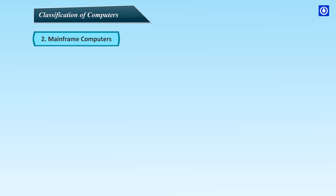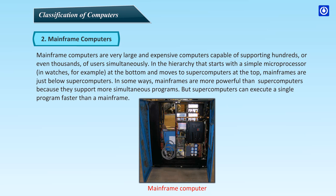Second, Mainframe Computers. Mainframe computers are very large and expensive computers capable of supporting hundreds or even thousands of users simultaneously. In the hierarchy that starts with a simple microprocessor at the bottom and moves to supercomputers at the top, mainframes are just below supercomputers. In some ways, mainframes are more powerful than supercomputers because they support more simultaneous programs, but supercomputers can execute a single program faster than a mainframe.